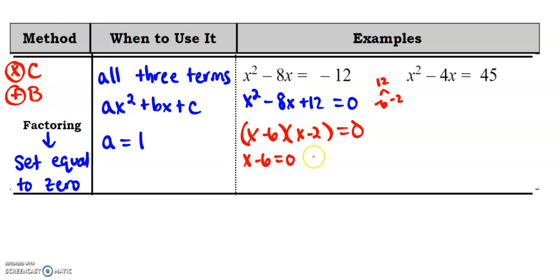I set each of these factors equal to zero. And then I solve them. So I get x equals six and x equals two. I'm going to pause this and then do the problem on the right hand side. And then you can come back and check your work. All right.